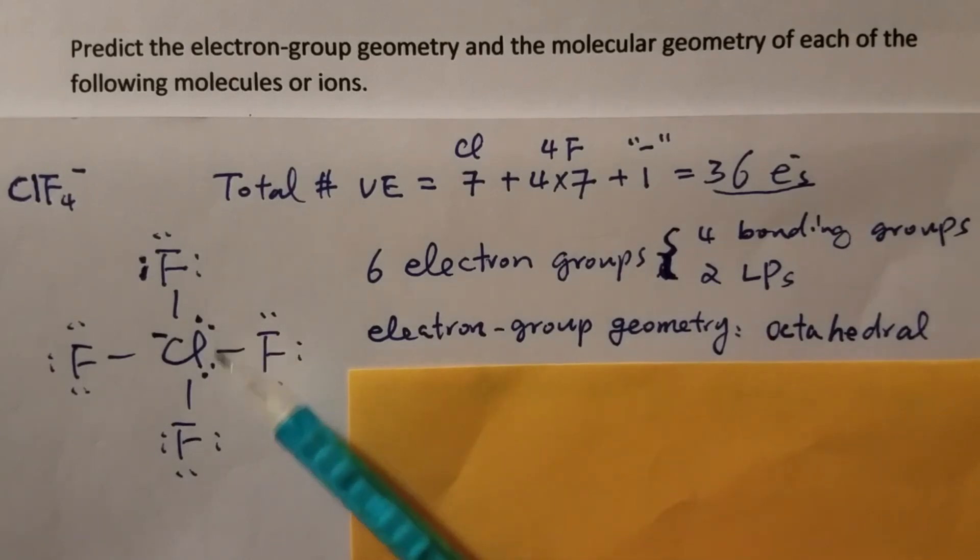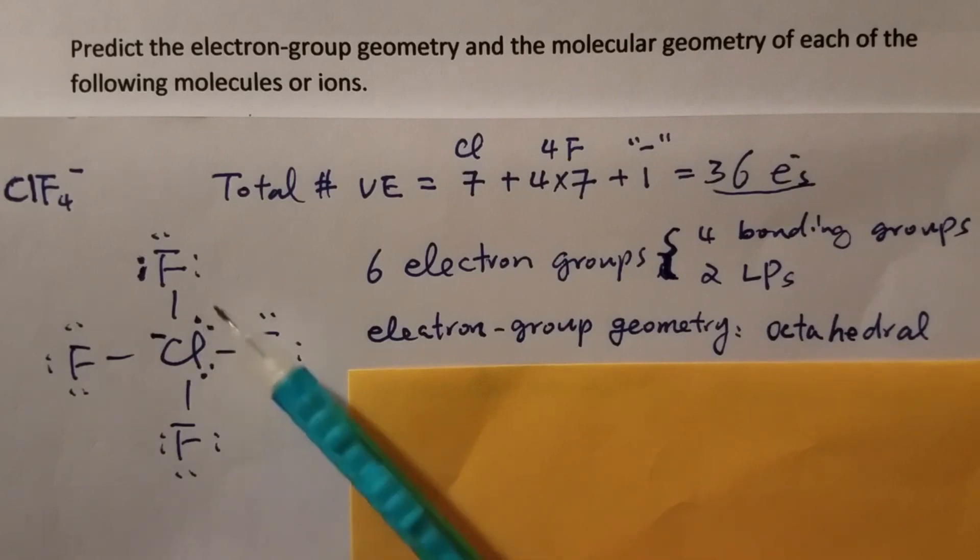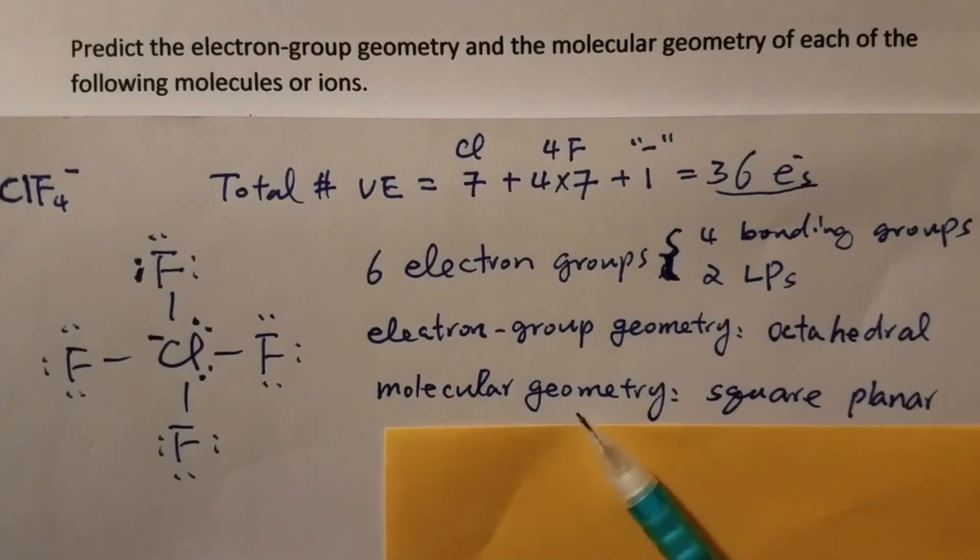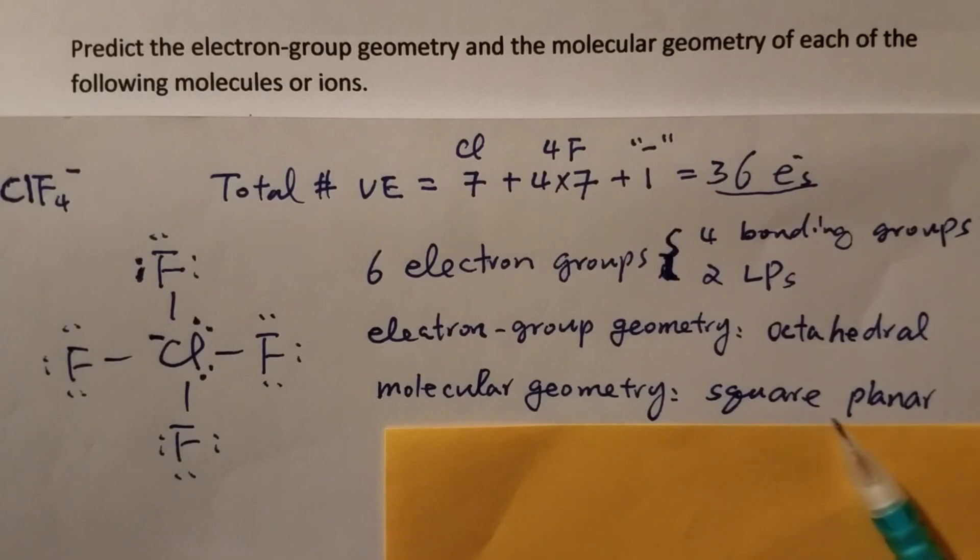Since there are two lone pairs, or two non-bonding electron groups, the molecular geometry becomes square planar, just two-dimensional.